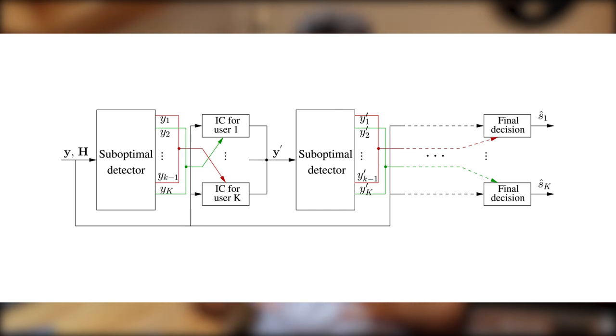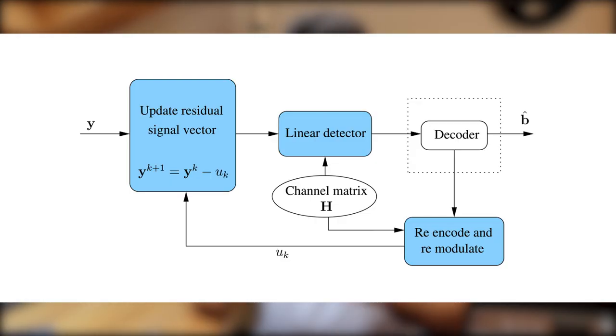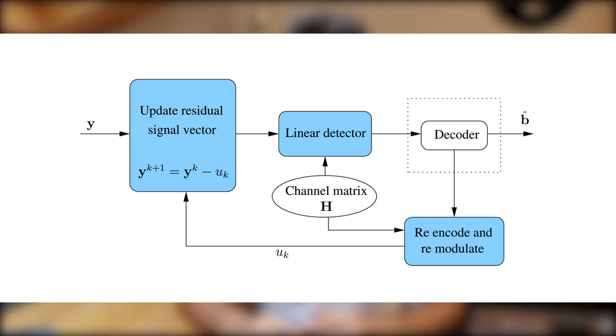Then we have the parallel interference cancellation (PIC) detector, where all the signals are analyzed in parallel. It is very good for situations where all users have approximately the same power. We also have the multi-stage interference cancellation detector, where each signal has to cross many stages of decoding before it is finally decoded. Lastly, for the interference cancellation family, we have the decision feedback decoder, which is a special case of the successive interference cancellation with a feedback and feed-forward structure, as shown in this image.